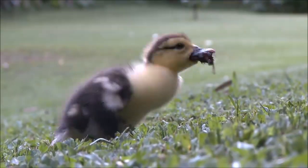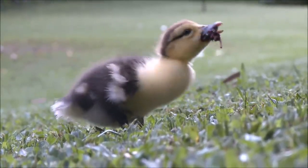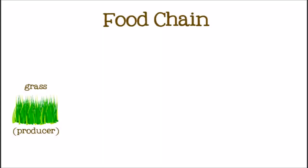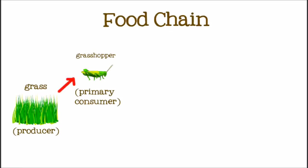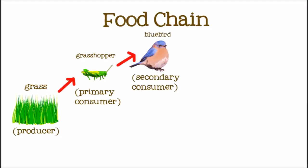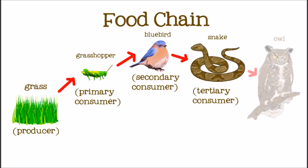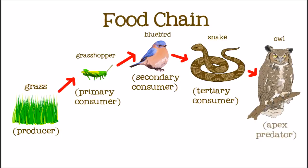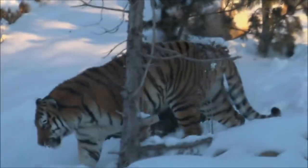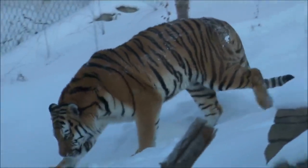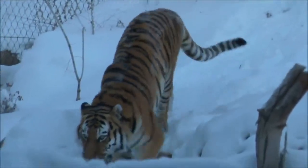Let's take a look at a longer food chain that also begins with grass. This time, let's make our primary consumer a grasshopper. The grasshopper eats the grass, and then gets eaten by a secondary consumer — a bluebird. Then the bluebird gets eaten by a tertiary, or third-level, consumer — a snake. The snake is eaten in turn by an owl, which is the apex predator in this food chain.